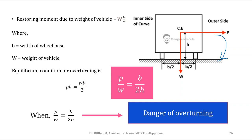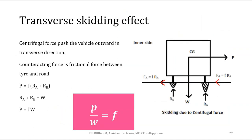This overturning moment is counteracted by the weight of the vehicle, which acts downward through the center of gravity. The restoring moment due to weight is W×(b/2), where b is the distance between the two wheels. At equilibrium: P×h = W×(b/2), or centrifugal ratio P/W = b/2h. There is danger of overturning when P/W approaches b/2h — a slight increase will cause the vehicle to overturn.